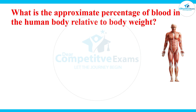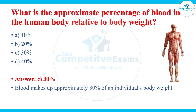What is the approximate percentage of blood in the human body relative to body weight? The answers are 10 percent, 20 percent, 30 percent, and 40 percent. The right answer is 30 percent — blood makes approximately 30 percent of an individual's body weight.